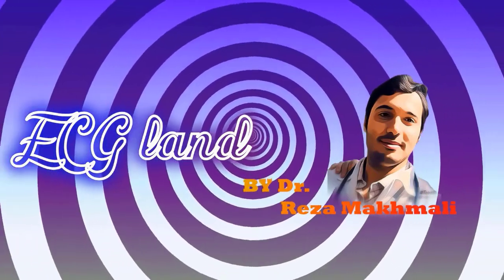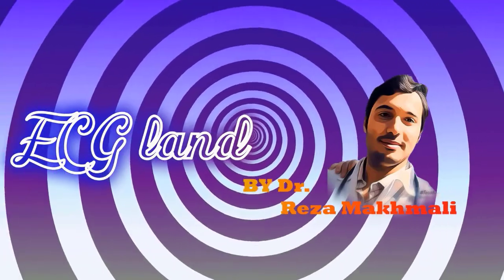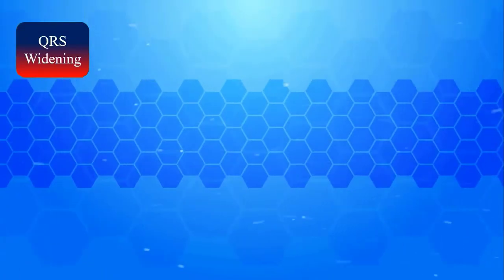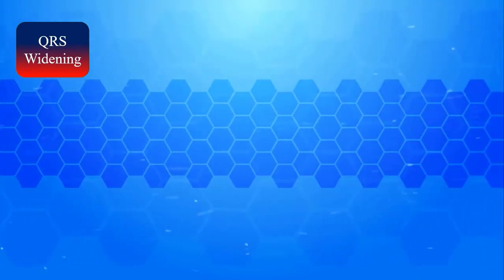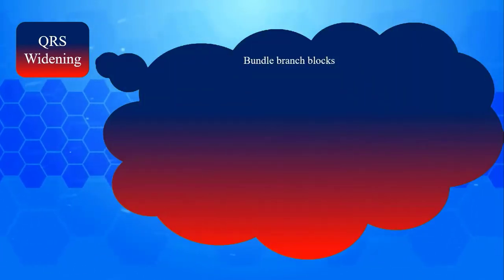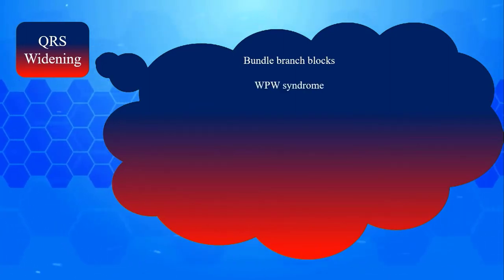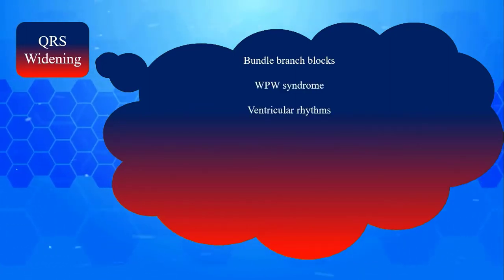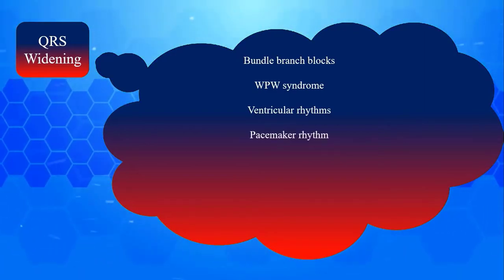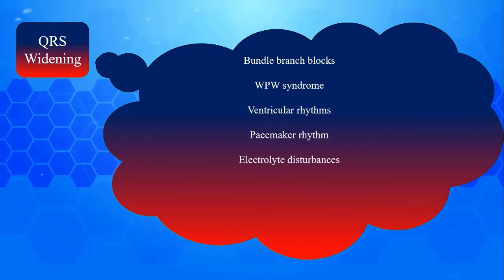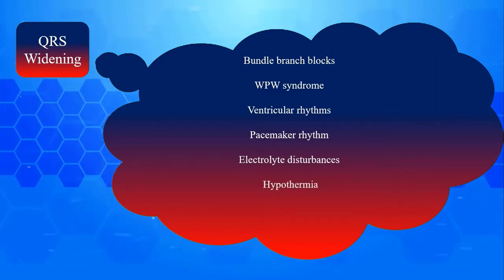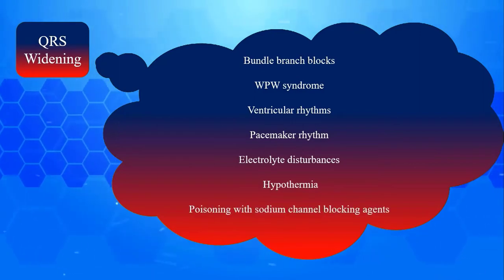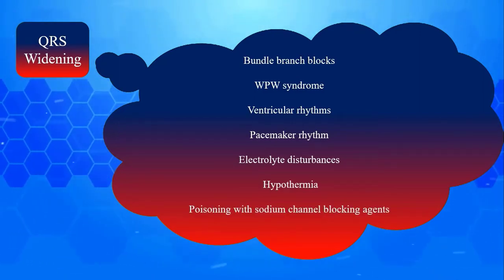Therefore every healthcare provider must know bundle branch block very well. Let's start with wide QRS complexes. Broad complexes have various causes: 1) bundle branch blocks, 2) WPW syndrome, 3) ventricular rhythms, 4) pacemaker rhythm, 5) electrolyte disturbances especially hyperkalemia, 6) hypothermia, 7) poisoning with sodium channel blocking agents like TCA toxicity.